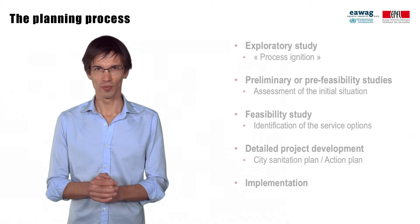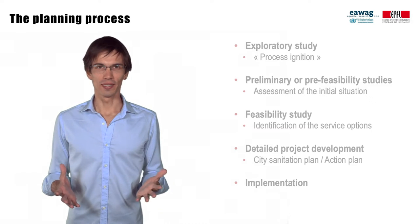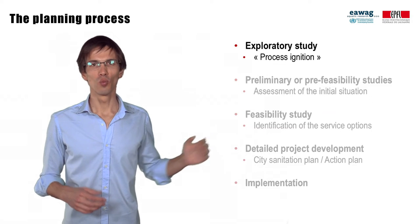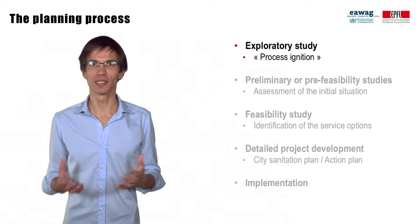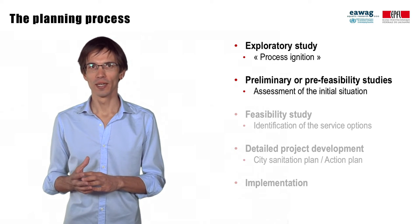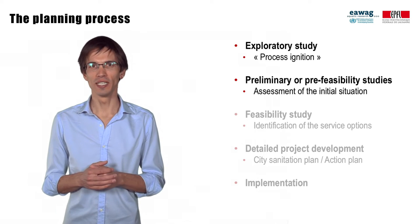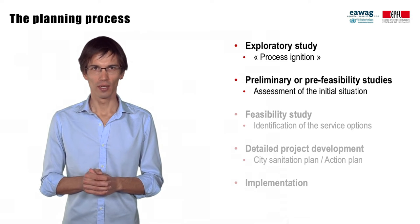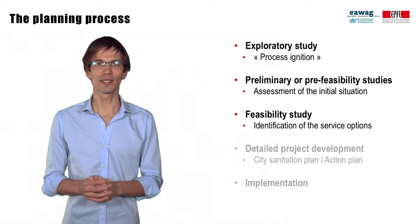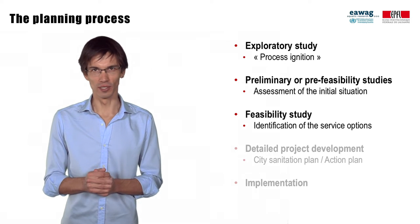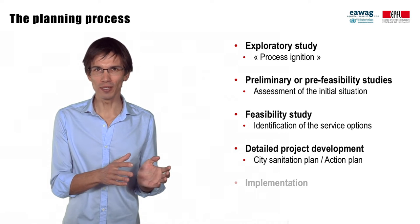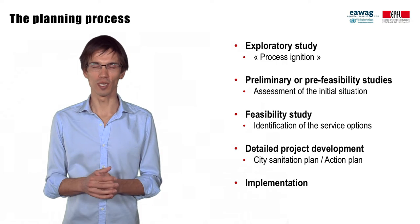Let's start to plan. You know the project cycle. First, you may have an exploratory study, which we could also call the process ignition. Then you have the preliminary or pre-feasibility studies, where the detailed assessment of the initial situation takes place. After that, we have the feasibility study, where the main tasks are the identification of service options. And once the options are selected, you move to the detailed project development, which finally opens the way to implementation.